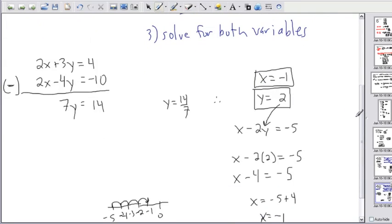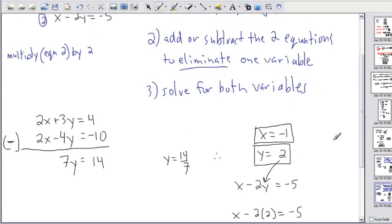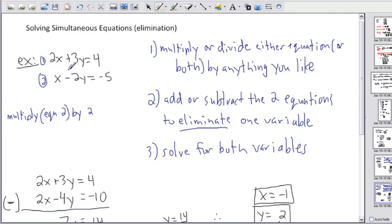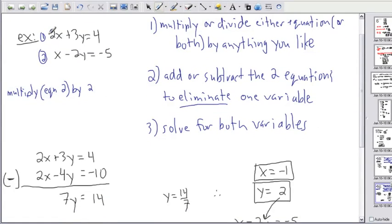X equals negative 1 and y equals 2 should solve this equation and this equation. Let's see if it really does. If I put in negative 1 for x, 2 times negative 1 gives you negative 2. That means negative 2 plus 3 times 2. Well, 3 times 2 is 6. So negative 2 plus 6 does indeed give you 4. This one here, negative 1 minus 2 times 2. 2 times 2 is 4. So negative 1 minus 4 is indeed minus 5. These two answers solve both equations at the same time.